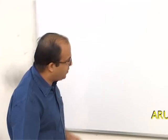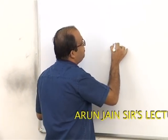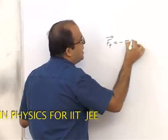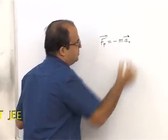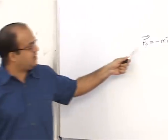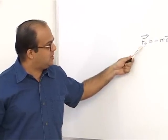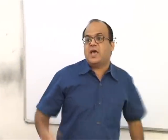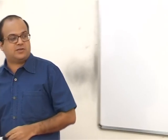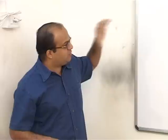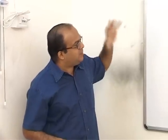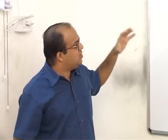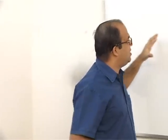Pseudo force: F⃗p equals minus m·a⃗₀, where F⃗p is the pseudo force, a⃗₀ is the acceleration of the reference frame, and m is the mass of the body under consideration. This is what pseudo force is — it has to be applied in addition to all real forces when you take a non-inertial or accelerated frame of reference.